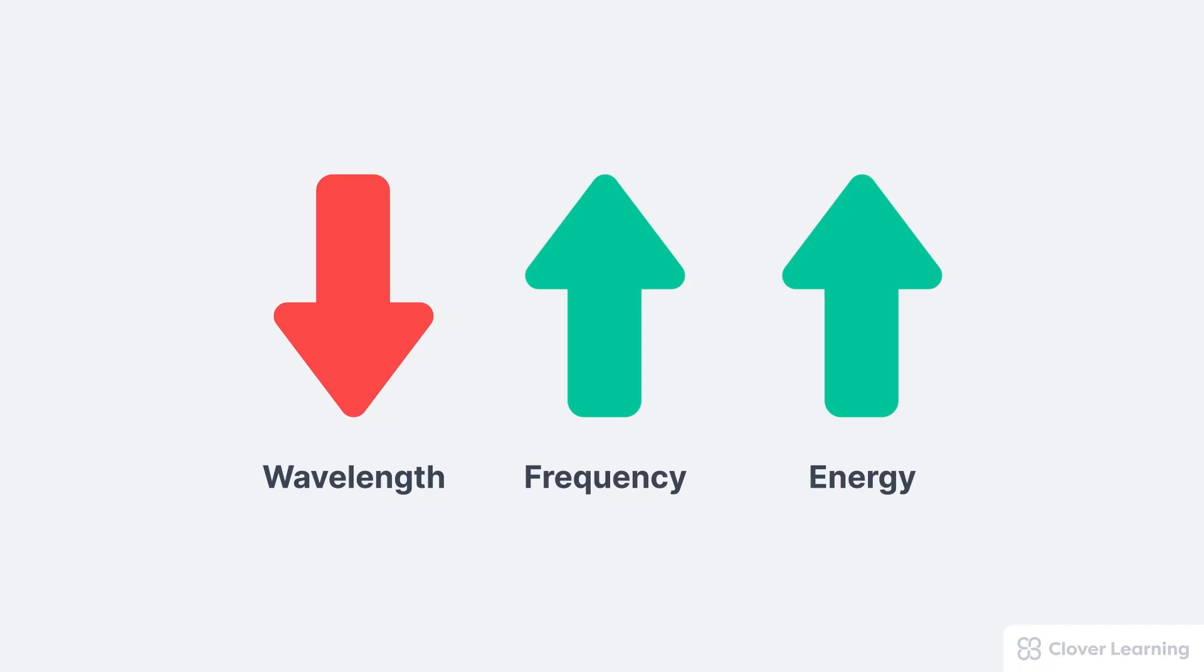So here's the general relationships that we need to understand. If the wavelength decreases, in other words, if the peaks of the wave get closer together, the frequency increases. That means there's more wave cycles per second. And the energy of the photon increases. Notice how there's no change in velocity, simply changes in the wavelength and frequency. And that's what influences the energy.